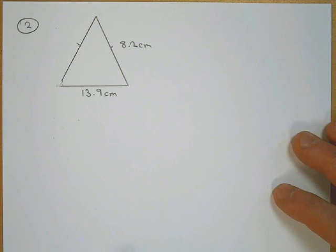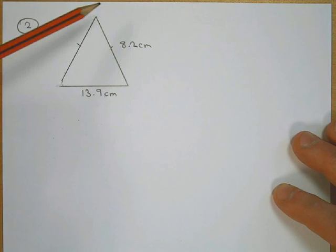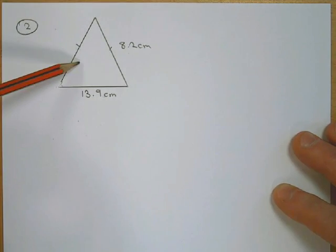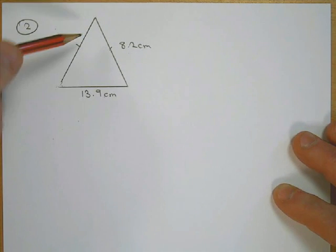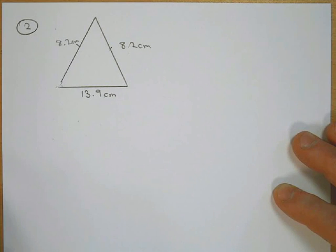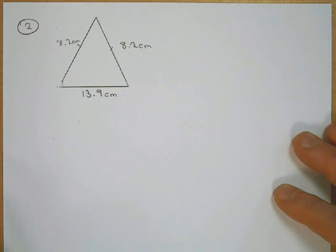A revision question on trigonometry. This is an isosceles triangle. These two sides are exactly the same, which means that this one here is going to be 8.2 cm as well. You have to work out all the angles inside this triangle.